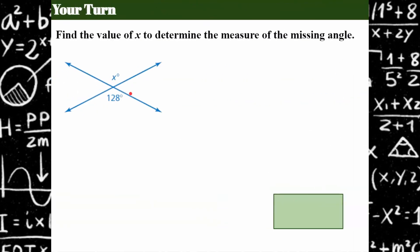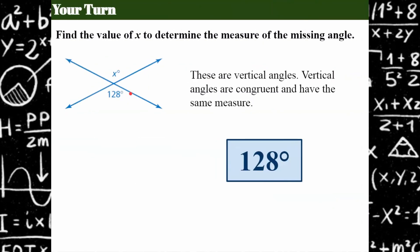Try this one — pause and come back when you're ready. Welcome back. These are vertical angles, and vertical angles have the same measure. So the missing angle is 128 degrees.